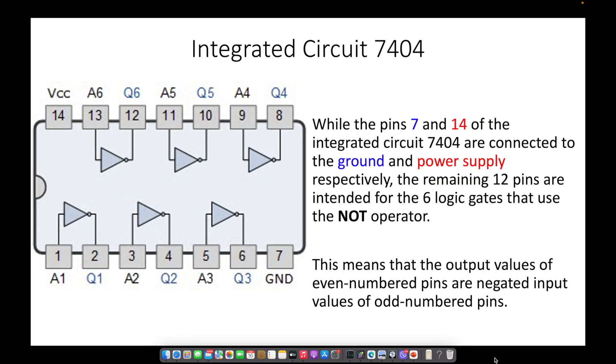This means that the output values of even numbered pins are negated input values of odd numbered pins. Therefore, the output values of pins 2, 4, 6, 8, 10, and 12 are the inverted or opposite values of the input pins 1, 3, 5, 9, 11, and 13 respectively.